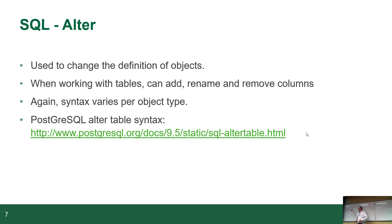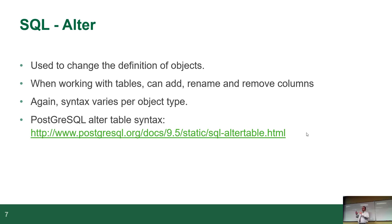ALTER is what you use to modify the definition of an object. If you want to add a column, rename a column, drop a column, change index rules — depending on the object, the syntax changes dramatically. For a table you'd go ALTER TABLE test, then ADD COLUMN with name and data type, or DROP COLUMN. But if you're doing an index or view, it's ALTER VIEW, ALTER INDEX, ALTER FUNCTION — the syntax changes per object.